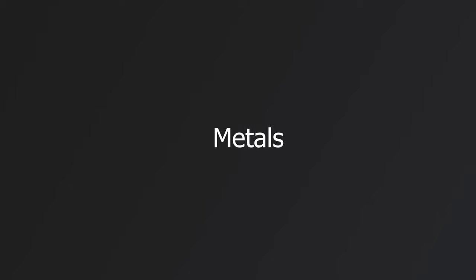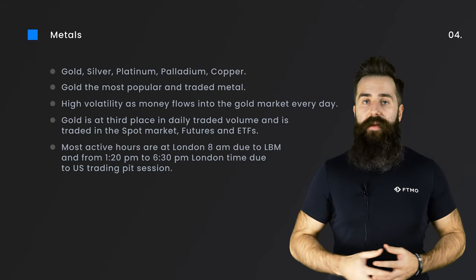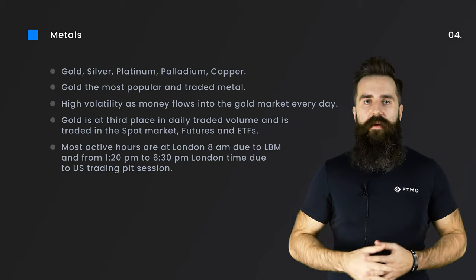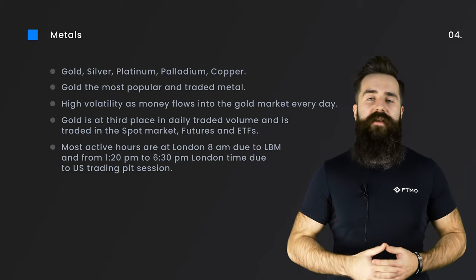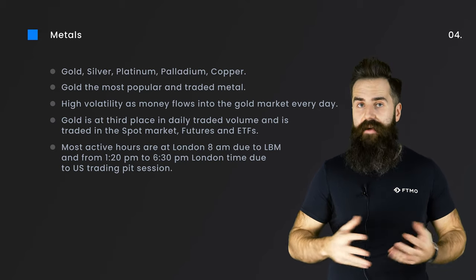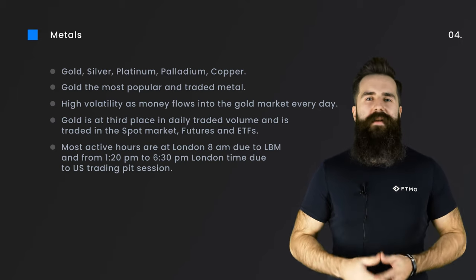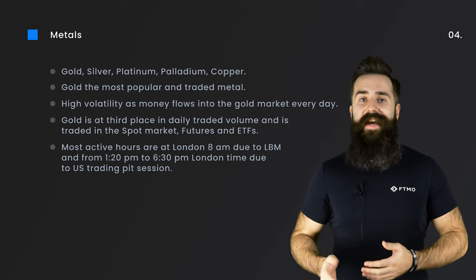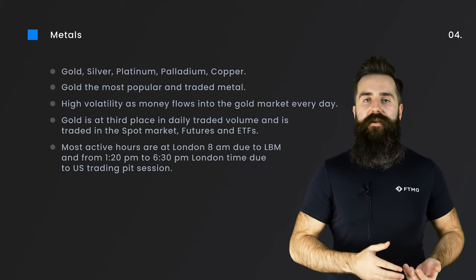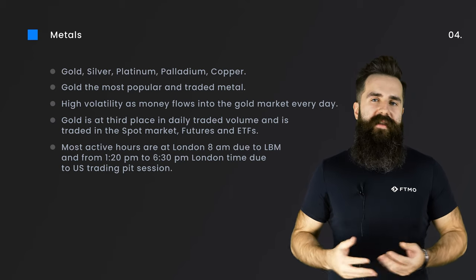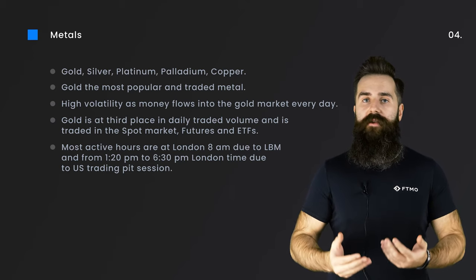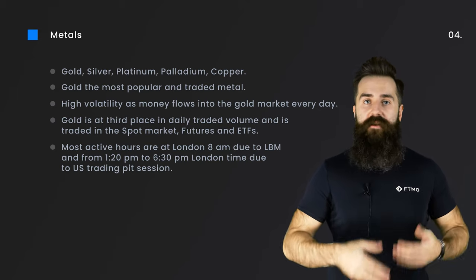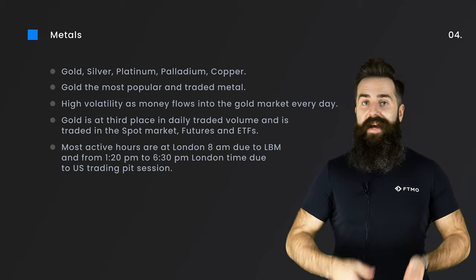Metals include gold, silver, platinum, palladium, and copper. Gold is the most popular and traded metal, due to its high volatility that brings opportunity to the markets every day. Gold moves so much mostly because market participants use it as a hedging instrument against periods of high inflation and currency devaluation. This is why so much money is flowing into the gold market every day. Gold is traded in many forms: in the spot market, futures, and ETFs.